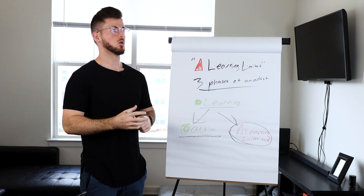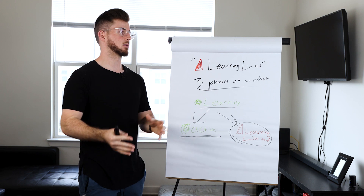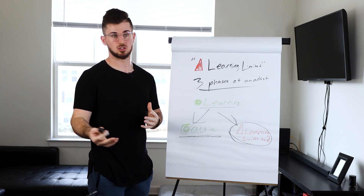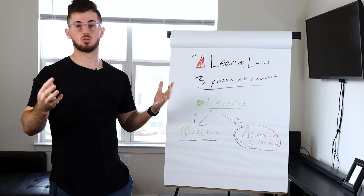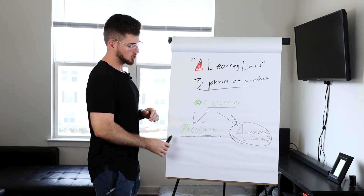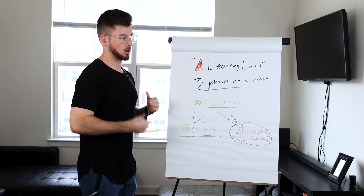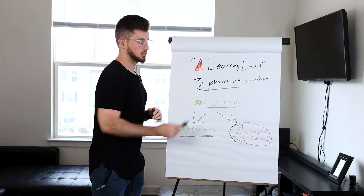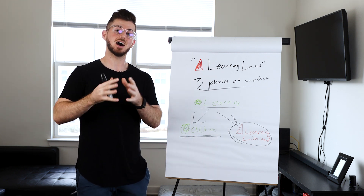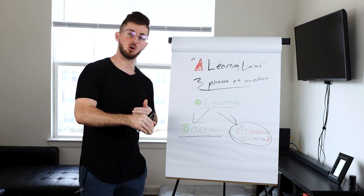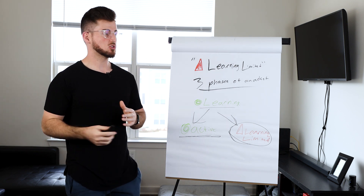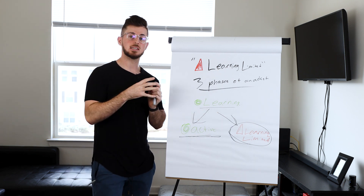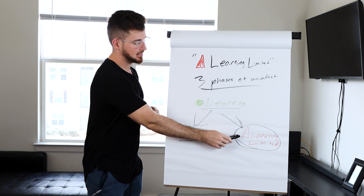In learning limited, Facebook essentially locks onto a subset of your audience — say 200,000 to 300,000 out of 2.1 million — and just stays with those people rather than reaching new ones. It won't go try to find new people because it can't get into active. Over time this will degrade performance on that ad set, though you won't see it immediately.